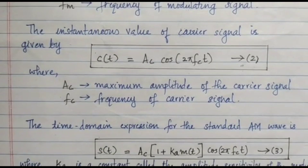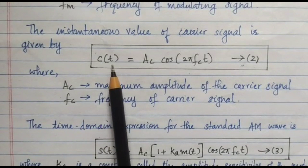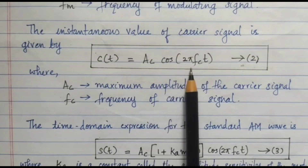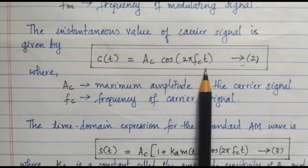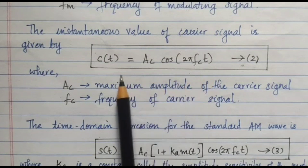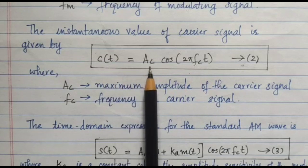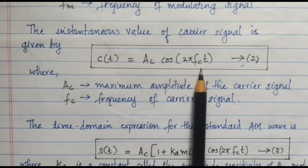The instantaneous value of the carrier signal is given by C(t) = AC cos(2π FC t). Here C(t) is the carrier signal with respect to time, AC is the amplitude of the carrier signal, and FC is the frequency of the carrier signal.